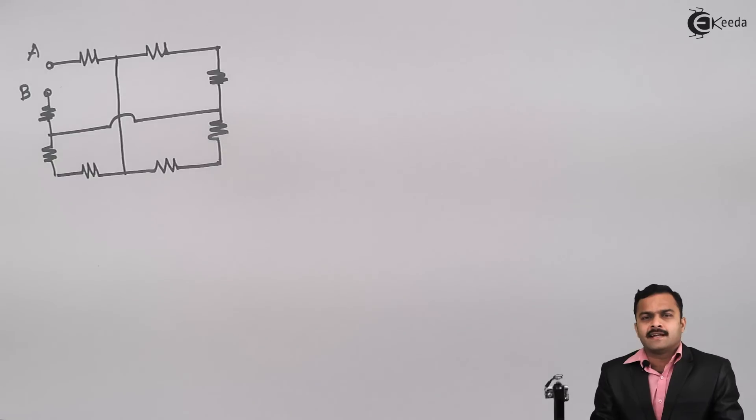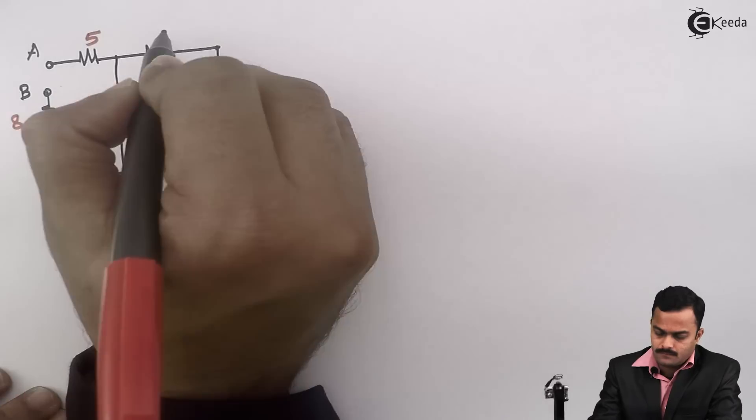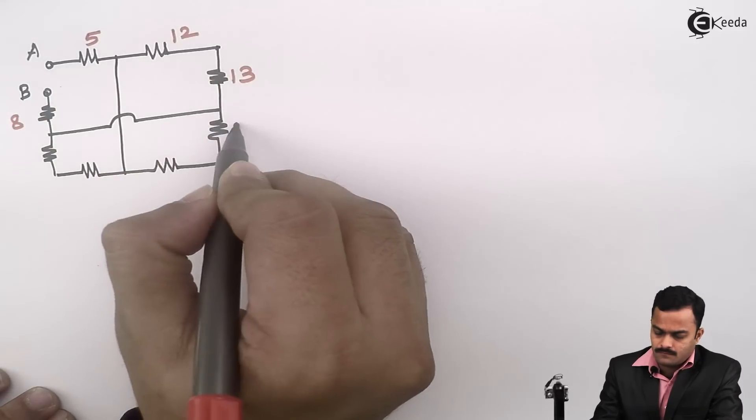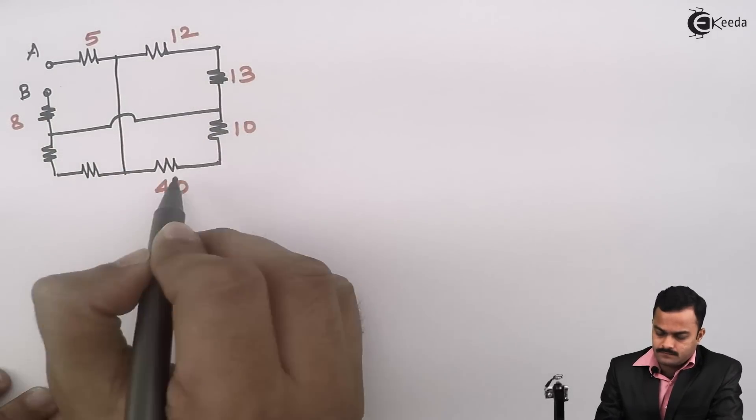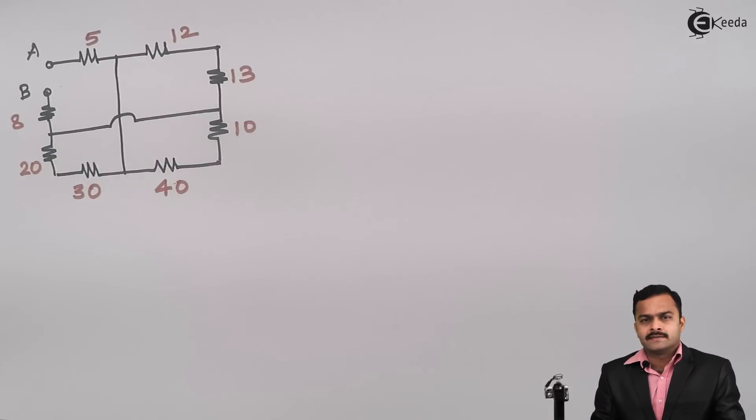So here I have shown a circuit having so many resistors, some connected in series or some may be connected in parallel. Let's give the values to them. So randomly I've given values to the resistors.